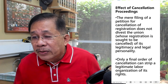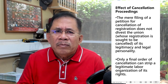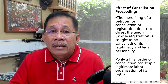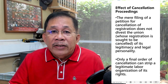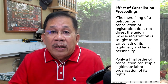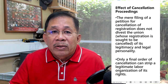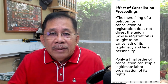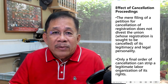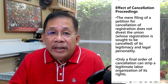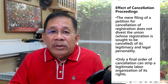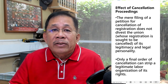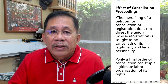The mere filing of a petition for cancellation of registration does not divest the union of its legitimacy and legal personality. Once a labor organization is registered, it continues to enjoy its legitimacy until its certificate of registration is canceled with finality. Only a final order of cancellation can strip a legitimate labor organization of its rights. Therefore, during the pendency of cancellation proceedings, the labor organization can still file a petition for certification election, negotiate a CBA, or even declare a strike.